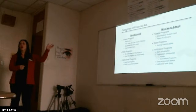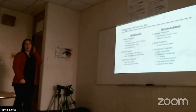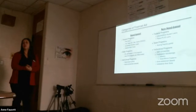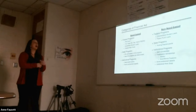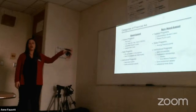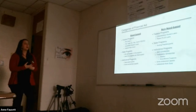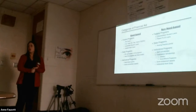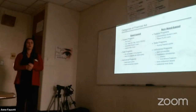Financial aid falls into two categories: need-based and non-need-based. Need-based aid includes federal programs like Pell Grants and subsidized student loans, state programs, and institutional aid. The subsidized loan does not accrue interest until six months after the student graduates or drops below part-time enrollment. The unsubsidized loan starts accruing interest as soon as it's disbursed. On the non-need-based side, you'll find merit scholarships, academic scholarships, and participation scholarships for athletics, clubs, and other organizations.